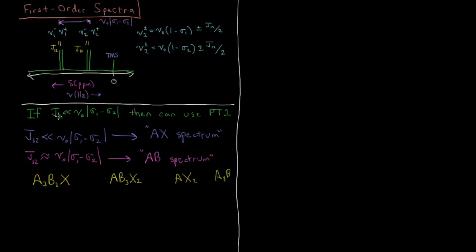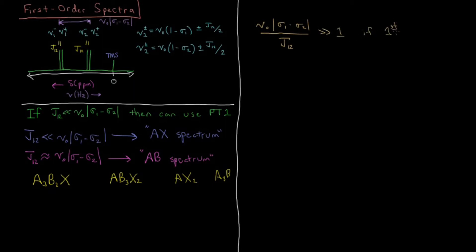Looking further into this, we have the condition that J12 is much less than nu0 times sigma1 minus sigma2. We can analyze this by dividing both sides by J12. Then we have nu0 times the absolute value of sigma1 minus sigma2, divided by J12. That value must be much greater than 1 for a spectrum to be first order.